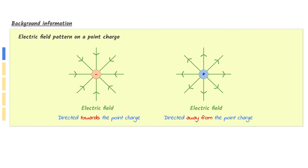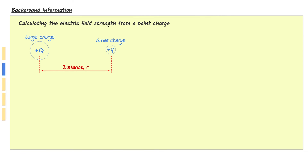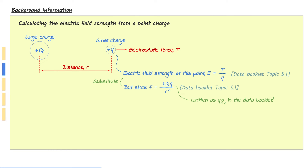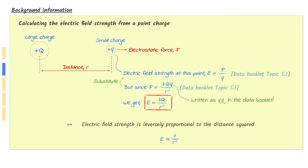Some background information. Here are the electric field patterns for a negative point charge and a positive point charge. The electric field is always directed towards the negative point charge and away from the positive point charge. Here are two charges — the electric field strength at a distance from the large charge can be calculated by dividing the force on the small charge by the charge of the small charge. Substitute the equation for the electrostatic force on the small charge into the previous equation. It turns out that the electric field strength is inversely proportional to the distance squared. This equation is not in the data booklet, so make sure to have it memorized.